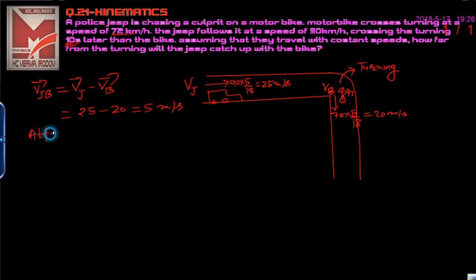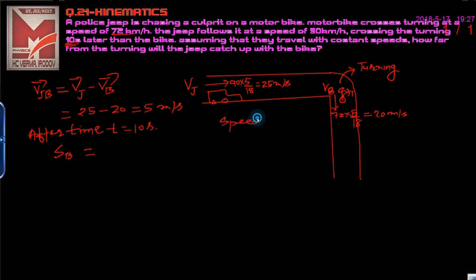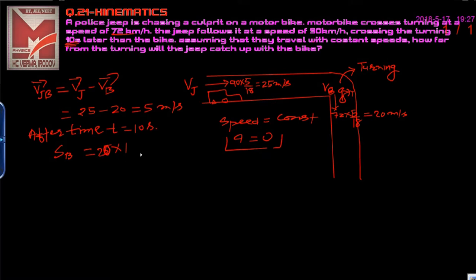After time t = 10 seconds, we calculate the distance covered by the bike. Since speed is constant, acceleration is zero, so distance equals speed into time. The speed of the bike is 20 m/s and time is 10 seconds, giving a distance of 200 meters.